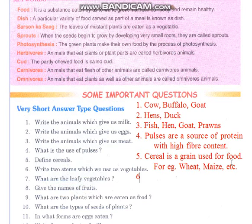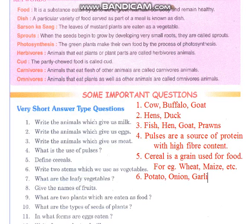Next: write two stems which are used as vegetables — stems that we eat as a vegetable. Potato, onion. You can take one more: garlic. Lesson seven.